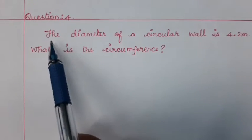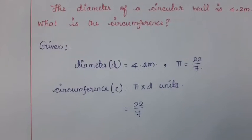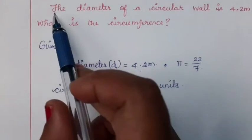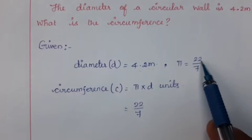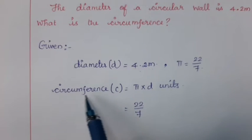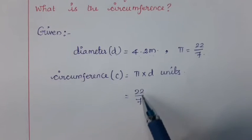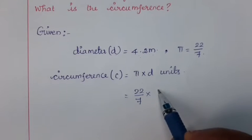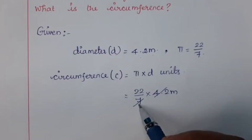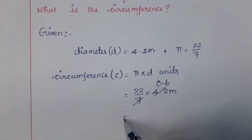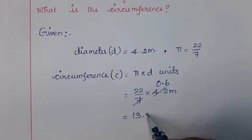Next, Question number 4: The diameter of a circular wall is 4.2 meters. What is the circumference? From the question, the given value of diameter d is equal to 4.2 meters. We know that pi is equal to 22/7 and the formula for finding the circumference c is equal to π into d units. Using these values, we get 22/7 into 4.2 meters. By simplifying 4.2 by 7 we get 0.6. By multiplying 22 by 0.6 we get 13.2 meters.